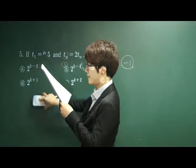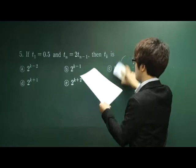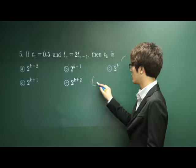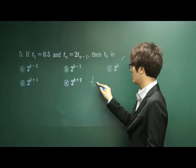If t₁ is equal to 0.5 and tₙ is equal to this recursive formula, then what is tₖ? For this kind of problem, we should find several terms first. Let's look for t₂ and t₃.